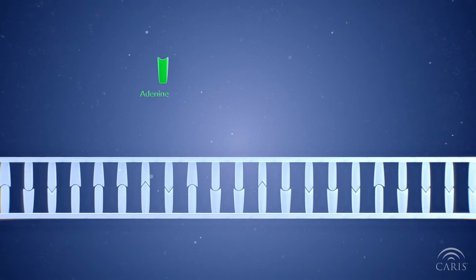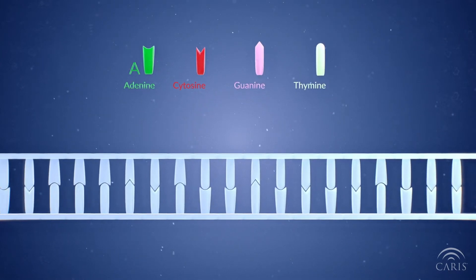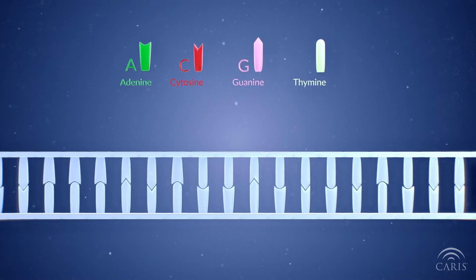Adenine, cytosine, guanine, and thymine. We'll represent them with an A, C, G, and T.